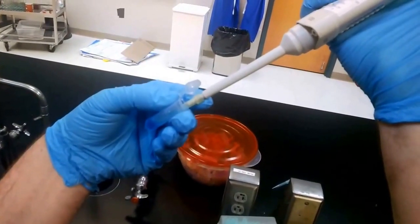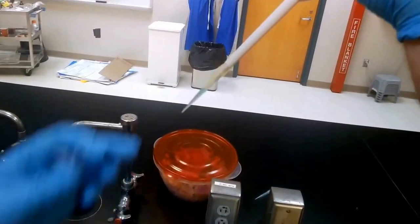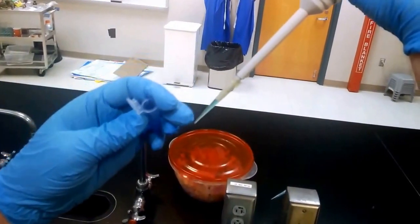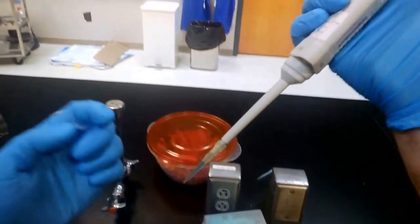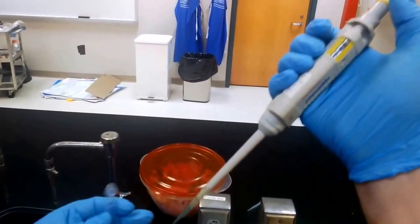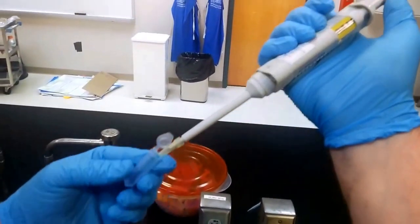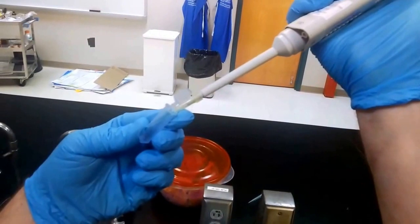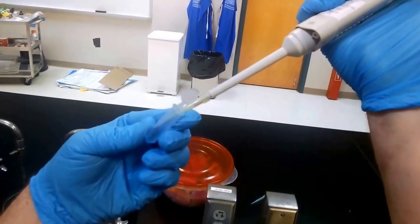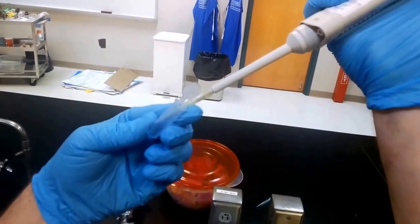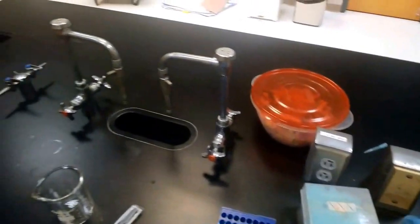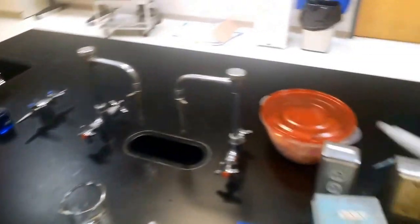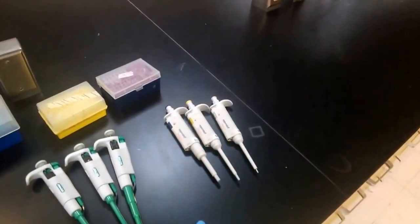All right, close the lid. Grab our tube that we're placing this into. Come inside, depress the button to the first stop, and then go to the second stop to provide the poof of air. Pull out, close the lid, and then eject our tip into our waste bin.